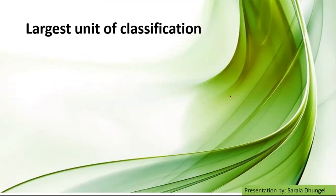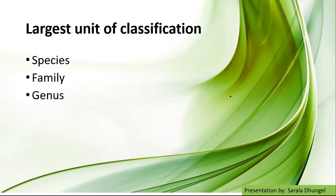So what is the largest unit of classification? Here's one MCQ. The options are: (A) Species, (B) Family, (C) Genus, and (D) Kingdom. You can pause the video for a while and think for the correct answer. The correct answer is Kingdom — it is the largest unit of classification.